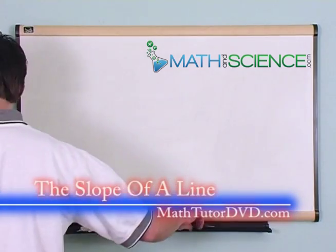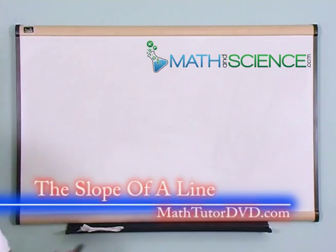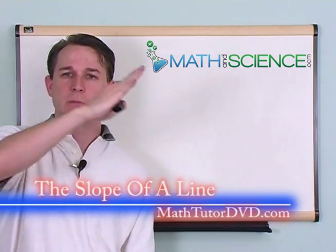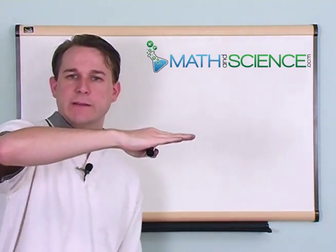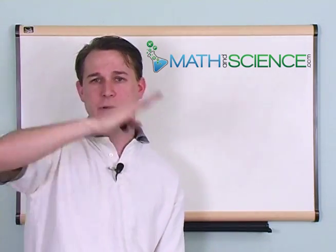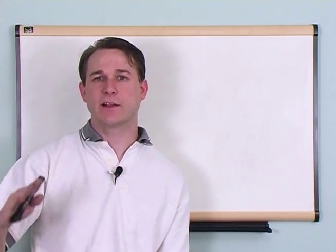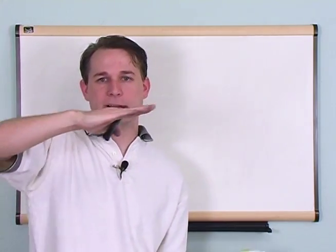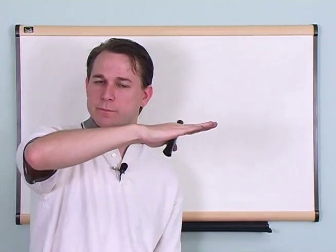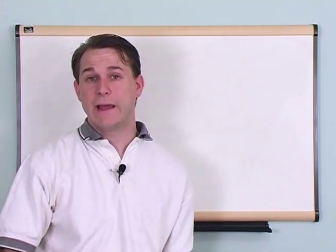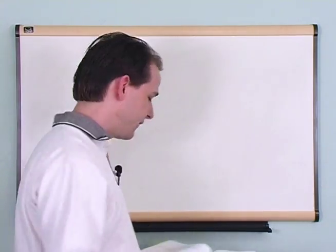The next topic we're going to talk about is what we call the slope of a line. You notice that in all of the equations we've worked so far, some lines look steeper, some look shallower. You can describe how a line looks by its slope. It's exactly what it sounds like — like going up a mountain. A steeper mountain has a steeper slope, and a flat piece of highway has a very shallow slope. We're going to use algebra to mathematically describe the slope.